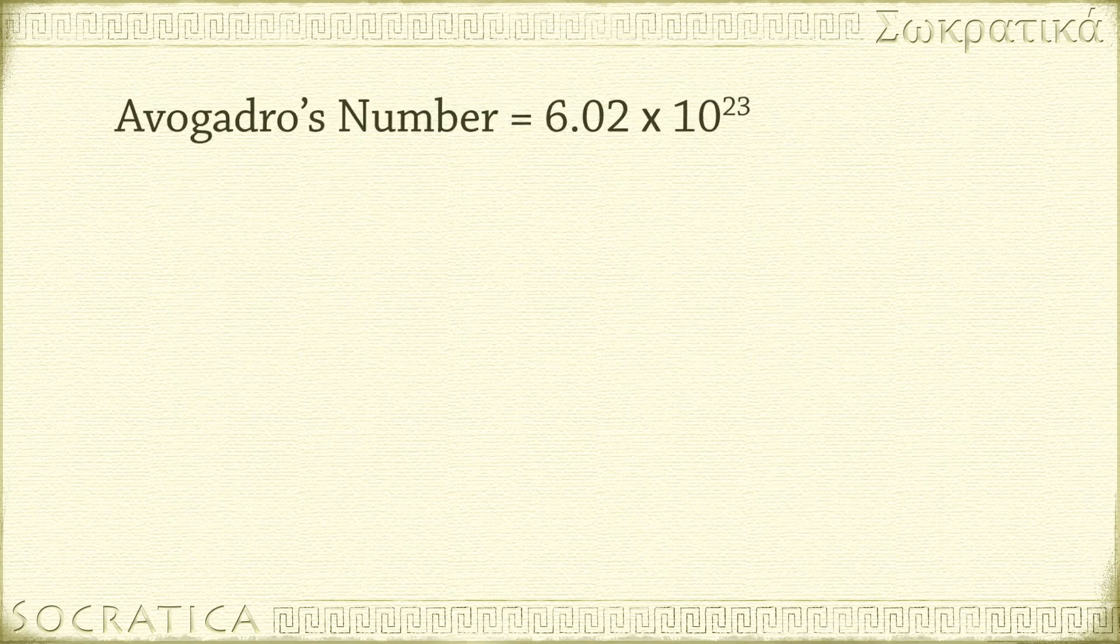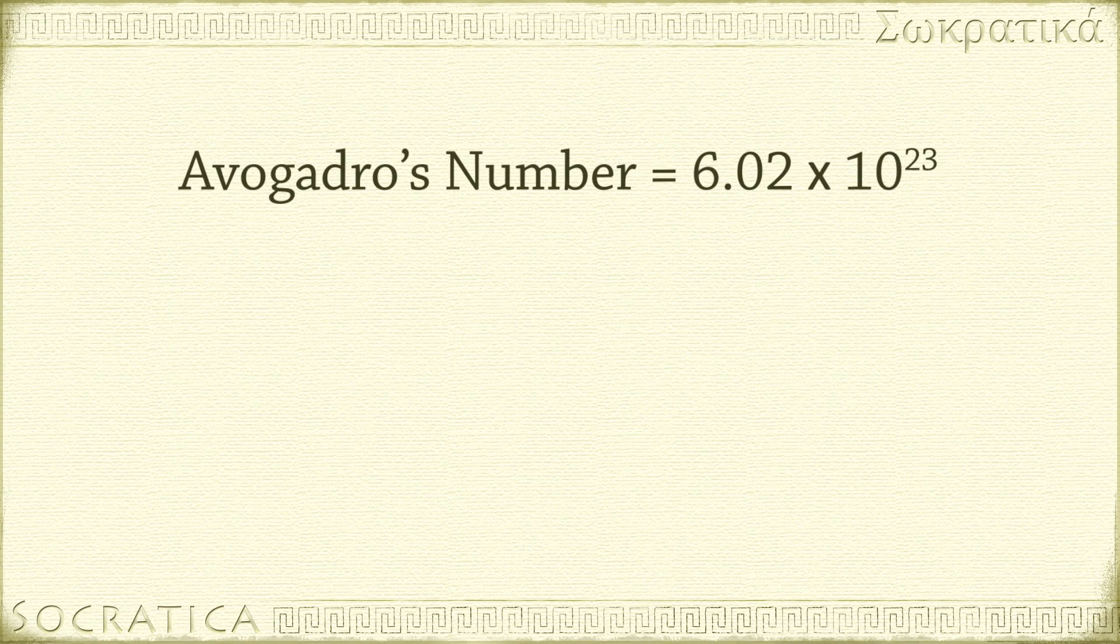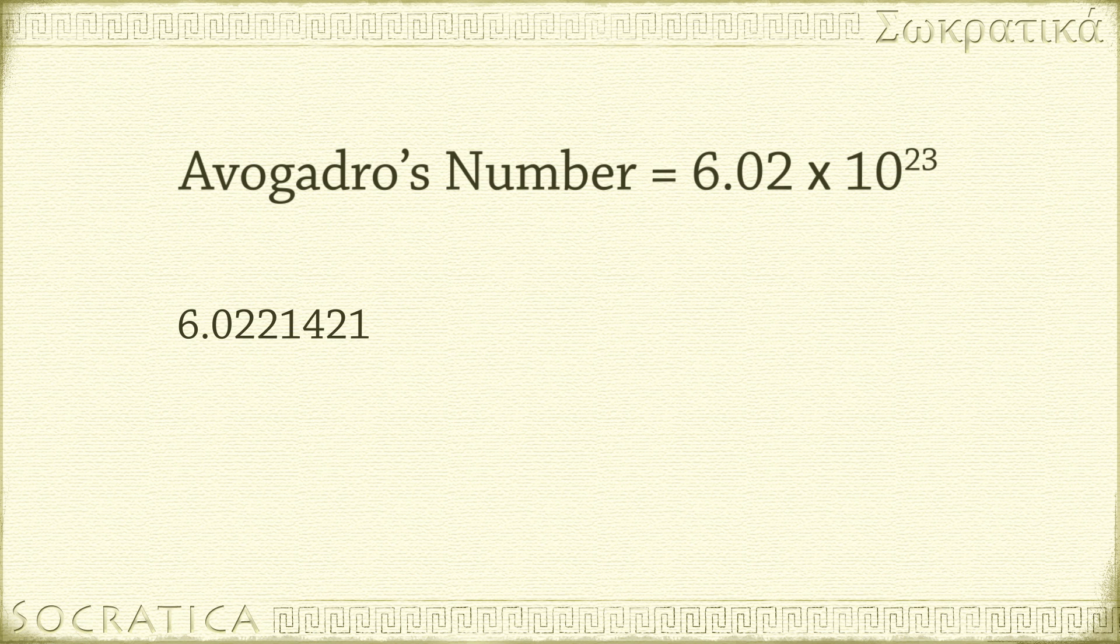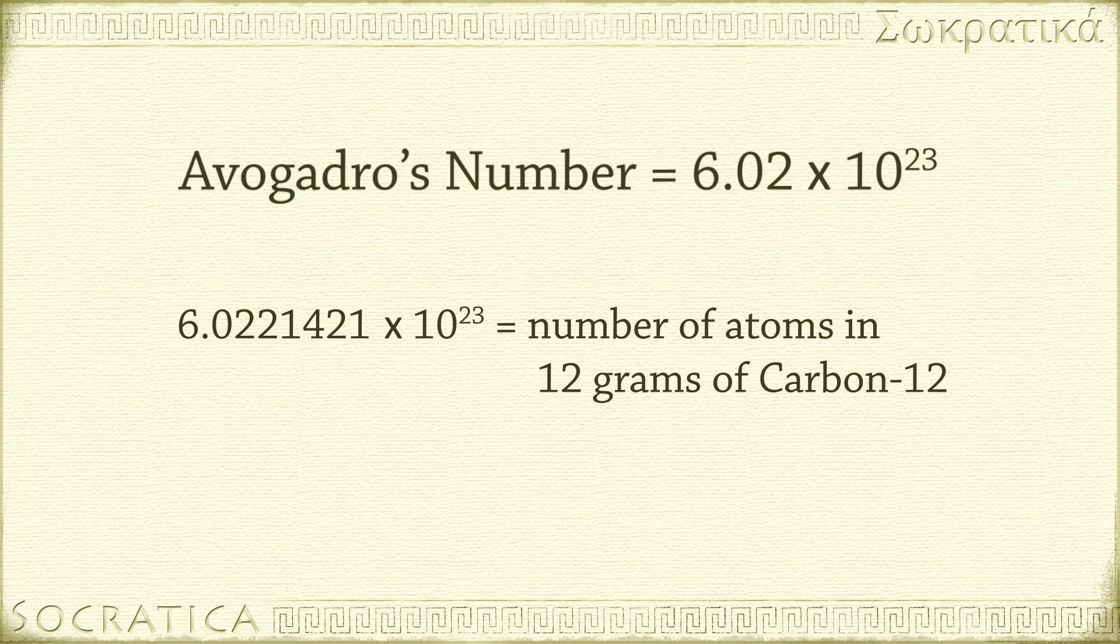But why 6.02 times 10 to the 23rd? Why this number, and not 20 billion or some other giant number? 6.0221421 times 10 to the 23rd is the number of atoms in 12 grams of carbon-12. Carbon-12 has historically been used as a standard in chemistry. For instance, we use carbon-12 as the standard for atomic mass. So Avogadro's number is not completely arbitrary. For ease of use, we typically round Avogadro's number to two decimal places, 6.02 times 10 to the 23rd.